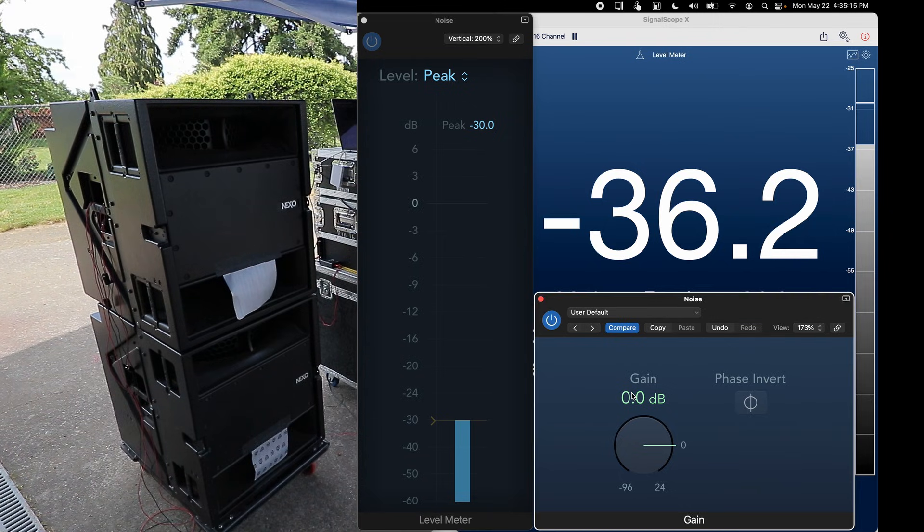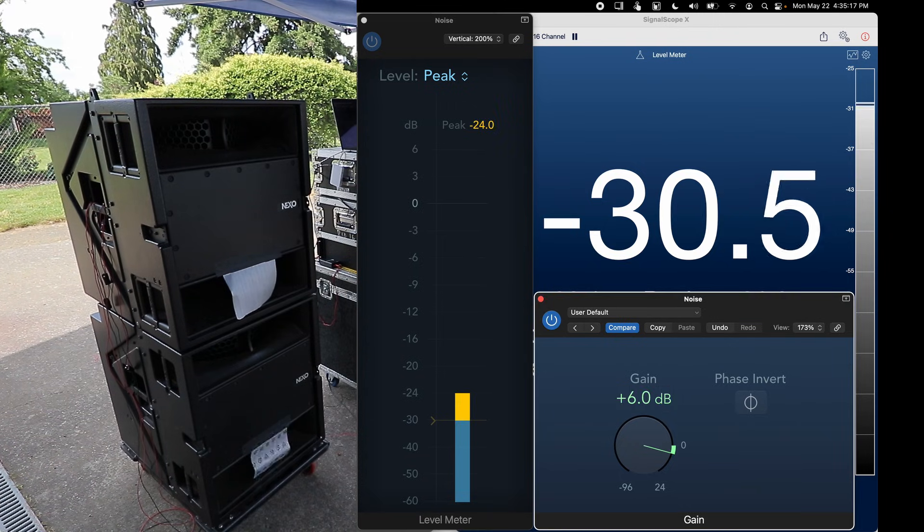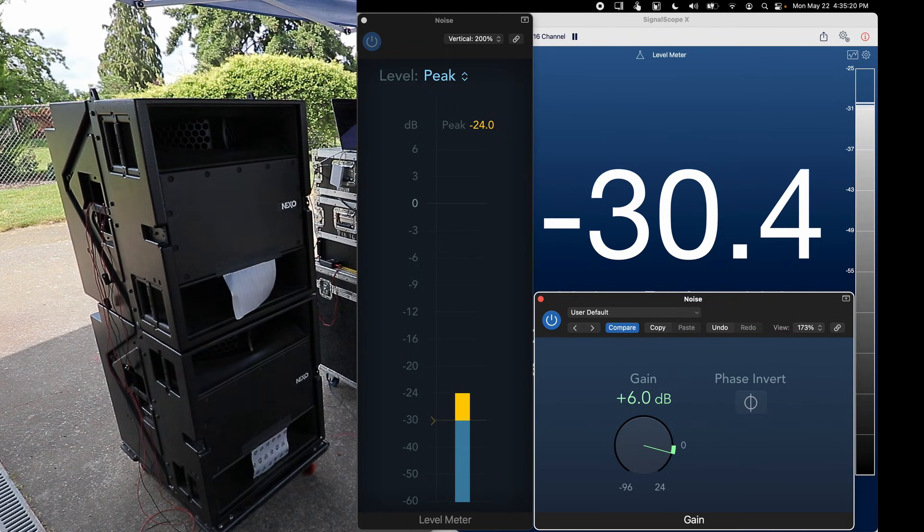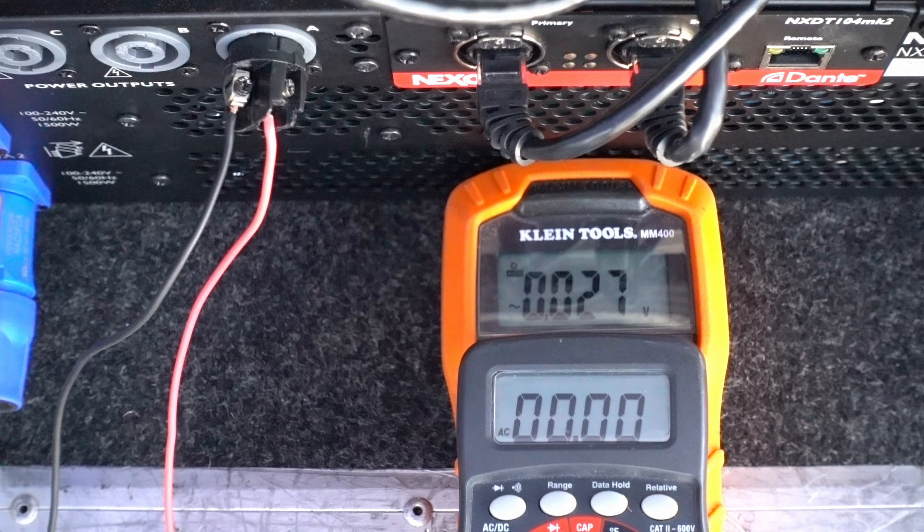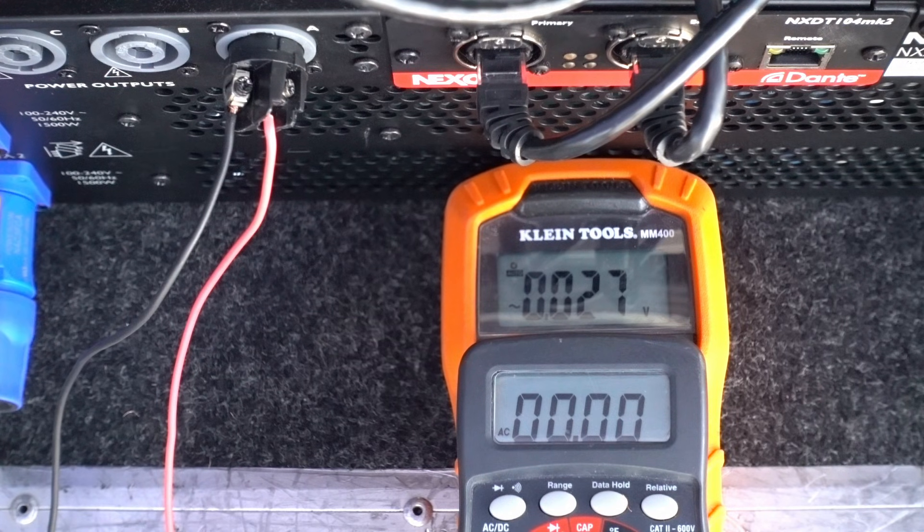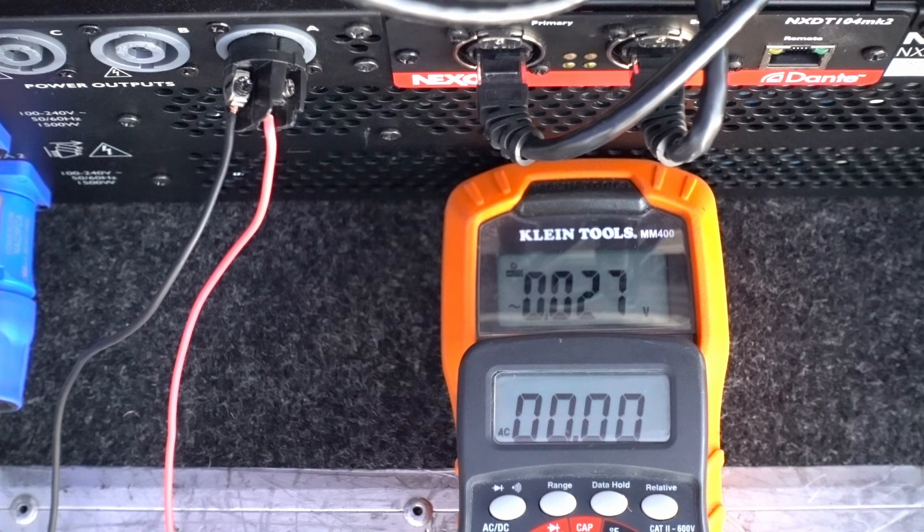If I increase the software output by 6 dB, you can see that the microphone reading has gone up by 6 dB as well. Going back down to where it was, I'm going to plug in a couple of meters so we can see the voltage and current output from the amp.